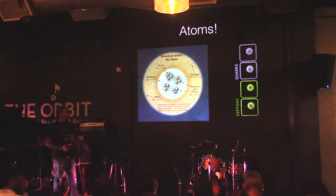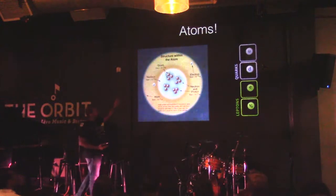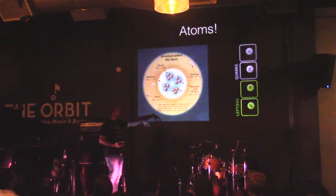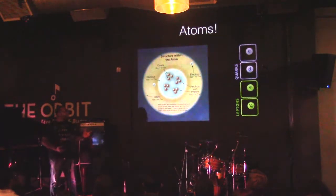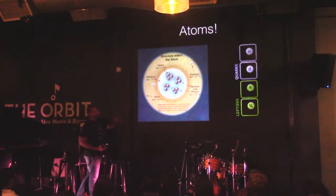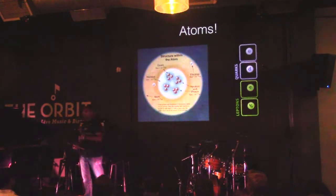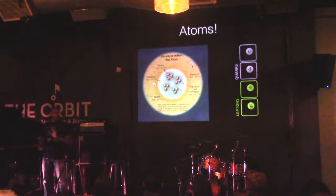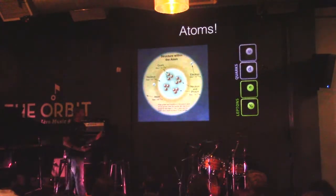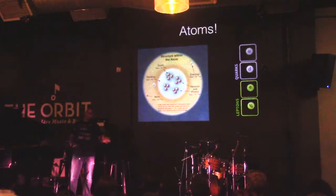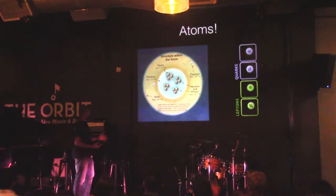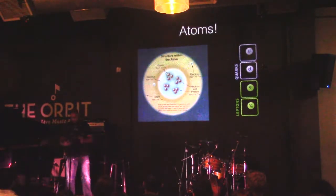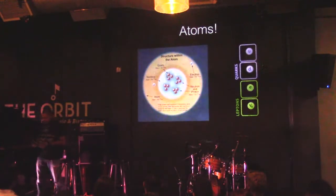This is all we need. We need these four particles: up quark, down quark, and then things called leptons — one is an electron, which is in the atom, and the other is called an electron neutrino. It's a cousin of the electron, and we see it when there's radioactive decay — we see these neutrinos come out. That's all we need for the fundamental particles.